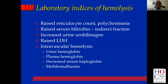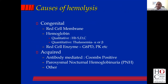Rarely, you can get something called methemalbuminemia. So these are the laboratory indicators of hemolysis: raised retic, raised indirect bilirubin, raised LDH, and intravascular hemolysis markers — presence of free hemoglobin in urine and plasma hemoglobin. Now coming to the causes — this is also very simple. Hematology is a very simple discipline. There are only two causes: congenital and acquired. Among the congenital causes, there are only three: a problem with the red cell membrane, a problem with hemoglobin (qualitative or quantitative), and a red cell enzyme problem.